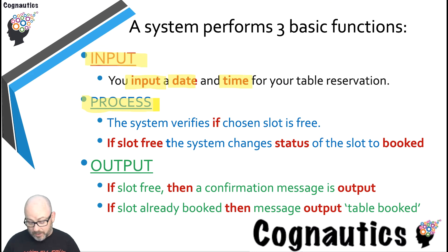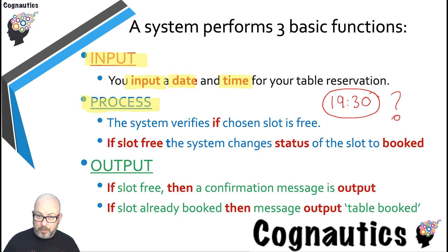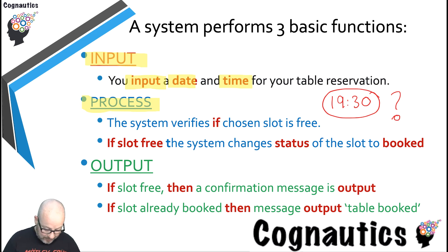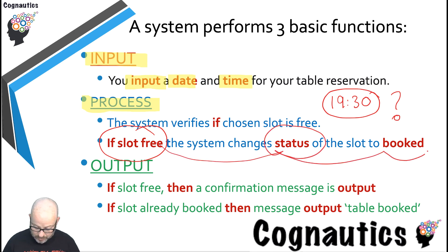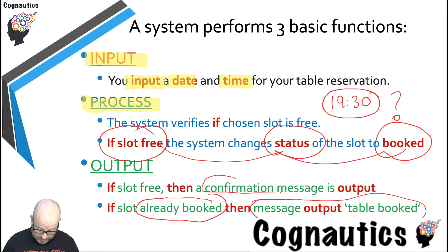The system will compare the time that you've input — let's say 19:30, which is half seven — that's the time you want to eat. Then the system's going to verify whether that slot is free. Has someone else booked that slot? You're going to be left with either a yes or a no: yes, the slot is booked, or no, the slot is free. If the slot is free, you have booked that slot and the status will change to booked. However, if the slot is already booked, you'll get a message saying choose another time, it's booked. If it's free, you'll get a confirmation message saying that's your slot, and you'll get sent a confirmation email, something along those lines.